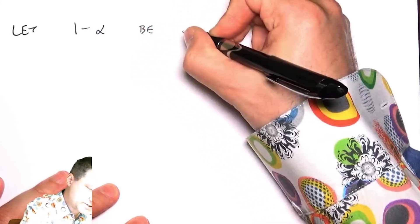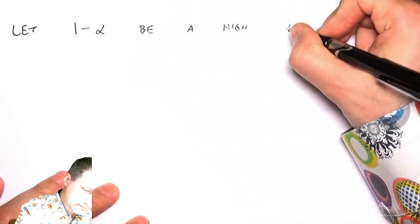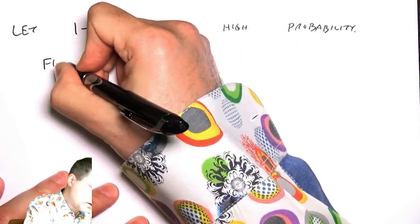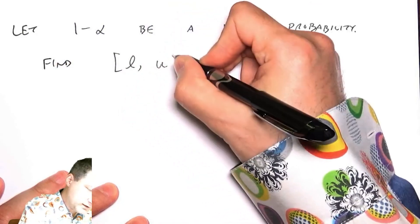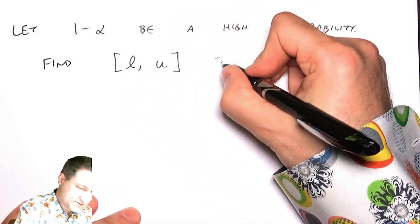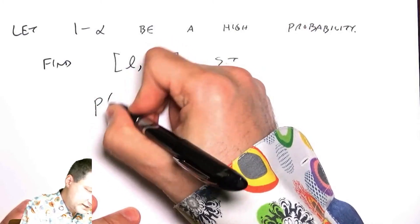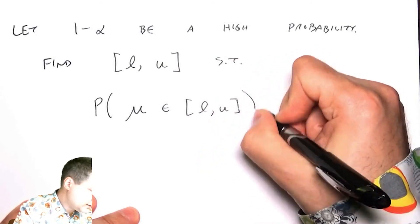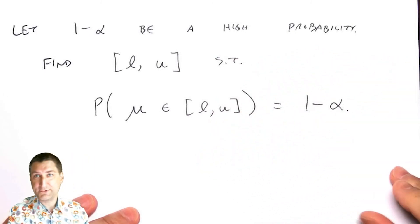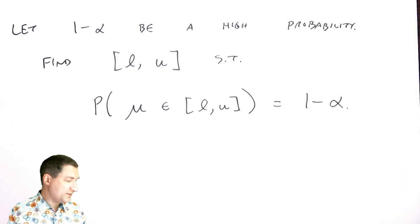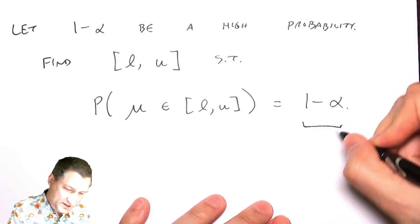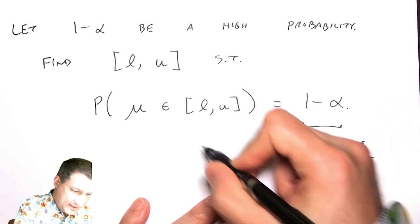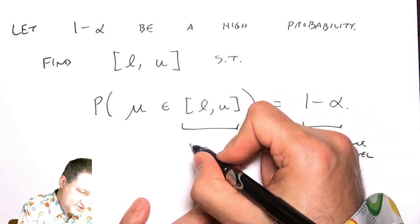Let 1 - α be some large number like 95% or 99%. I want to find an interval [L, U] such that the probability that the true mean is in this interval equals 1 - α. This is called the confidence level, and this range is called the confidence interval.